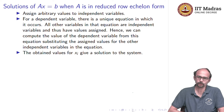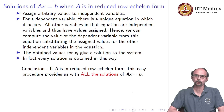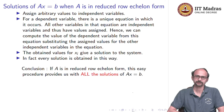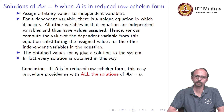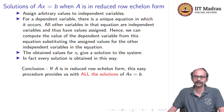Putting it all together: the obtained values for xi give a solution to the system, and in fact every solution can be obtained in this way. The conclusion is that if A is in reduced row echelon form, the algorithm is: find the leading 1s — their column numbers tell you the dependent variables; all other variables are independent. Assign arbitrary values to independent variables, then calculate dependent variable values from their equations. This procedure provides all solutions of Ax = b.